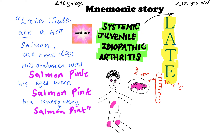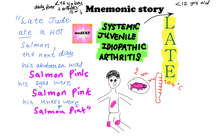Idiopathic means the cause might not be known. So what does a 16-year-old boy present with? It's typically a 16-year-old boy who presents with daily fever and arthritis, and this arthritis might commonly be in two or more joints.